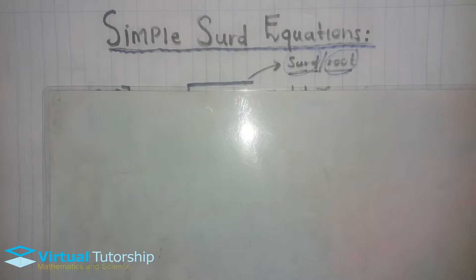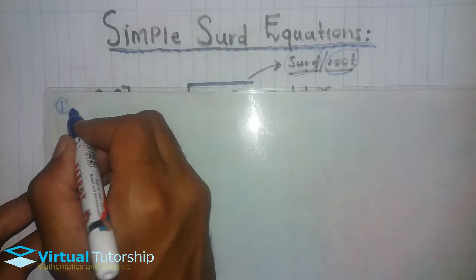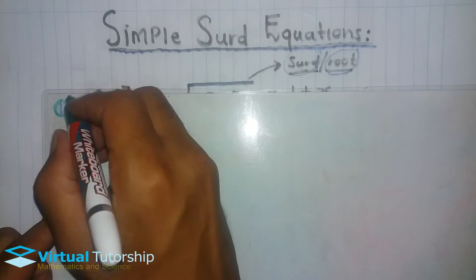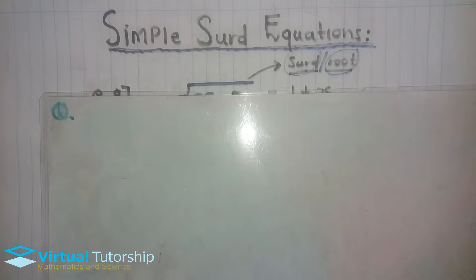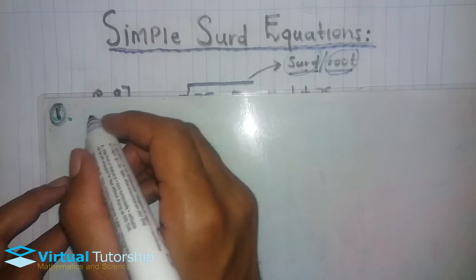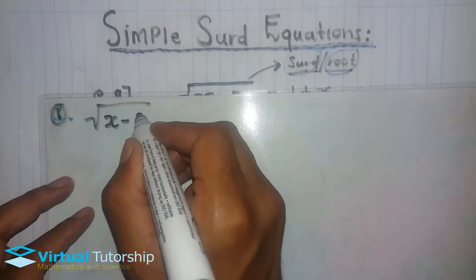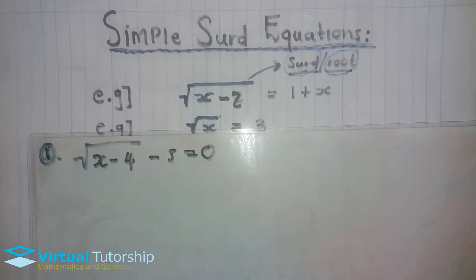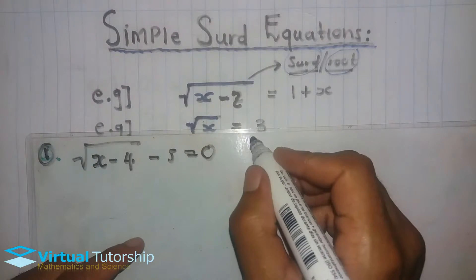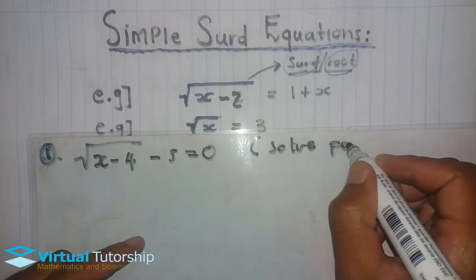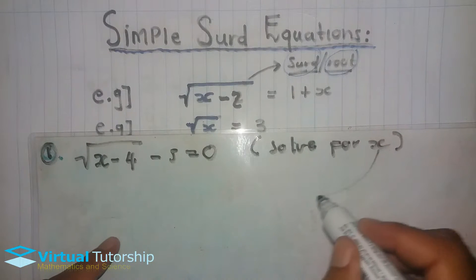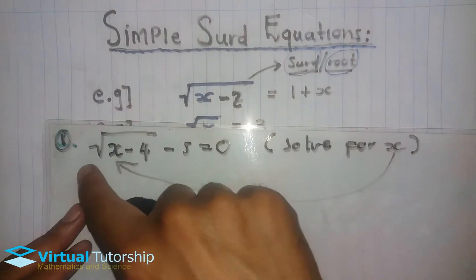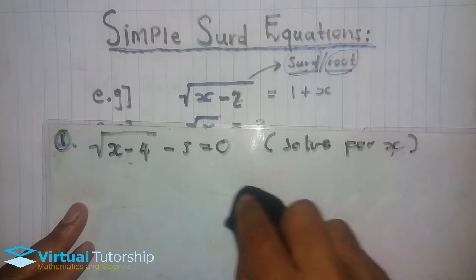Let's take the first example. Number one: the square root of (x minus 4), minus 5, equals zero. In this topic, like a surd equation, we solve for x. The variable is under the square root, so in order to solve this equation we need to eliminate the square root.